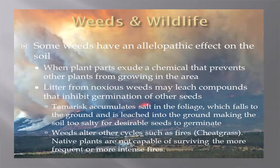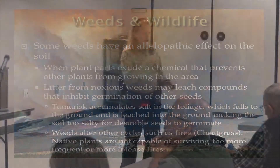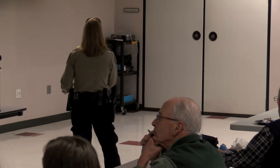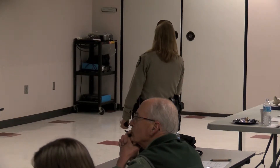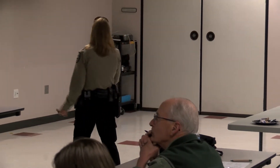Some weeds have an allelopathic effect on the soil, where plant parts exude a chemical that prevents other plants from growing in the area. Litter from noxious weeds may also leach compounds that inhibit germination of other seeds — so it's not just that these weeds are growing, but they're also leaching into the soil and causing problems for native plants. Tamarisk accumulates salt in its foliage, and when that falls to the ground and is leached in, it makes the soil extremely salty and hard for other plants to grow.